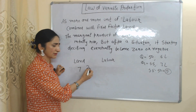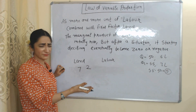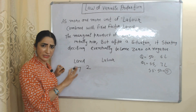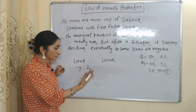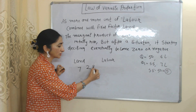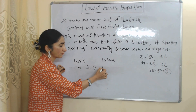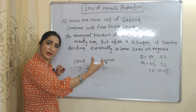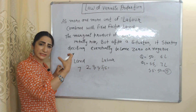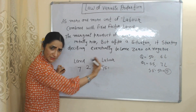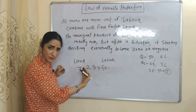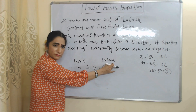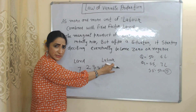But initially only 2 laborers are working, meaning this land is underutilized. As we hire 3, 4, 5, 6, 7 laborers, our output is increasing. That means additional labor is giving us more output, so we can say the marginal product of labor is increasing.